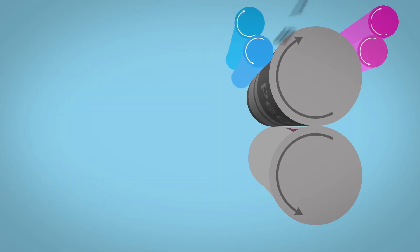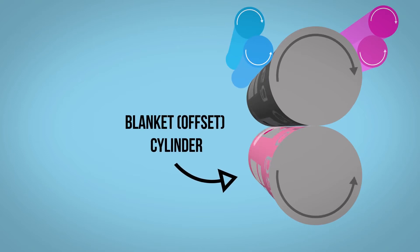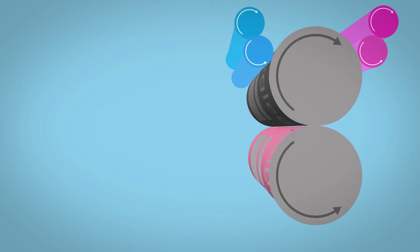This image is then offset onto another cylinder with a rubber blanket. The addition of this process results in a clearer and sharper final image, and is where offset printing gets its name.